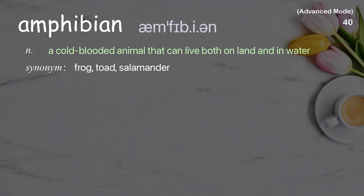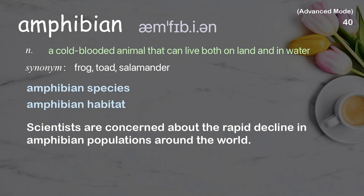Amphibian: A cold-blooded animal that can live both on land and in water. Examples: Amphibian species, Amphibian habitat. Scientists are concerned about the rapid decline in amphibian populations around the world.